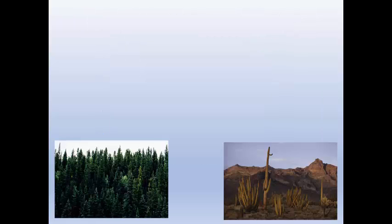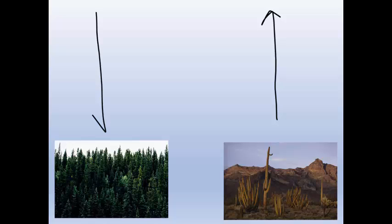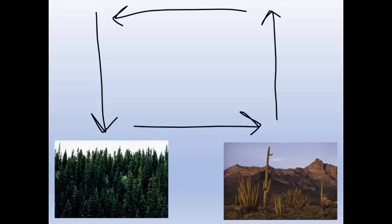We know that all land is not the same. Here I have a desert and a forest. If you were to walk barefoot in the desert, the sand would be really hot, but you could walk barefoot in a forest — it doesn't heat up the same way. So even if they were at similar latitudes, the desert would be hotter because rock heats up faster than trees. So the air above the desert is going to rise, and the air above the forest is going to fall, creating a convection current over land.